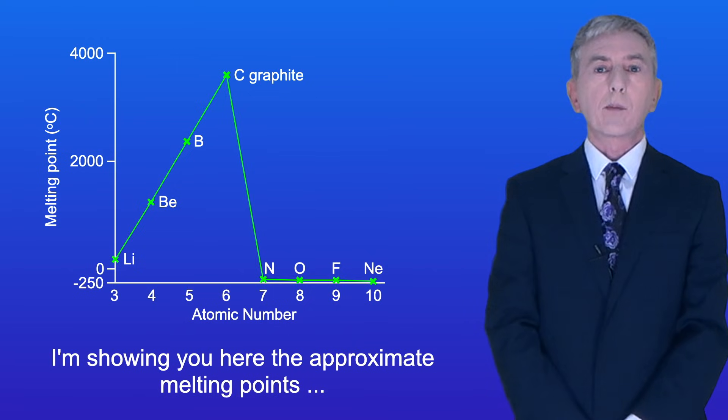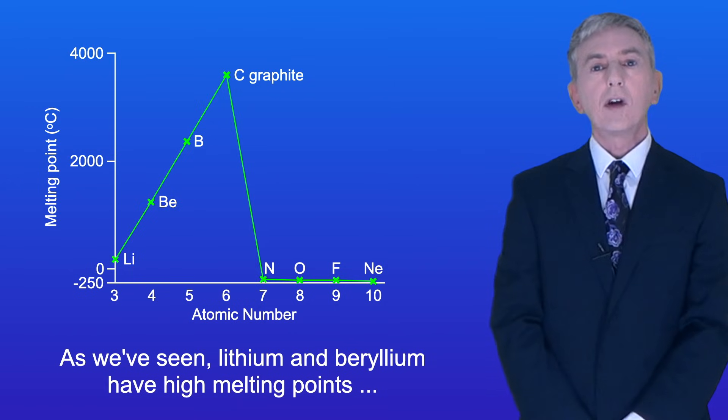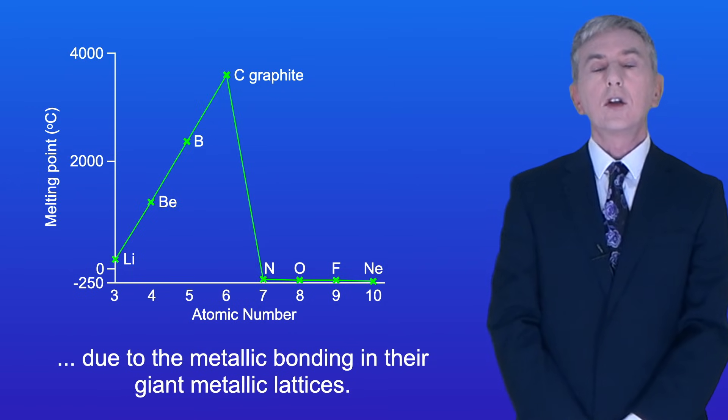I'm showing you here the approximate melting points of all of the elements in Period 2. As we've seen, lithium and beryllium have high melting points due to the metallic bonding in their giant metallic lattices.